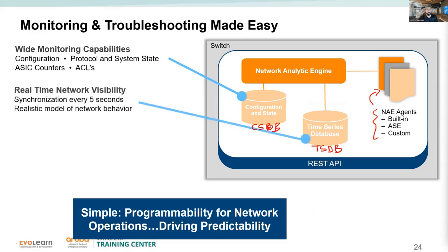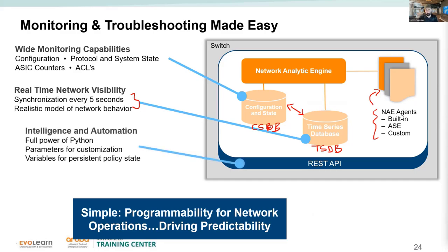The configuration database holds configuration state. The time series database provides real-time visibility — every five seconds there is an interaction between the two databases. Agents execute certain actions, intelligence, and automation using the REST API. A Python script, for example, can communicate with the switch via REST API to read or make changes.